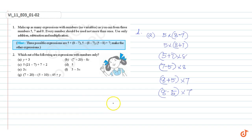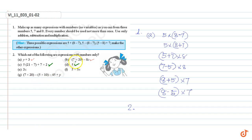Question number two: which of the following expressions are expressions with numbers only? This expression has variable y, this expression has variable z. This expression doesn't have a variable, so this is an expression with numbers only. This expression also has only one number, that is 5. This expression has variable x.